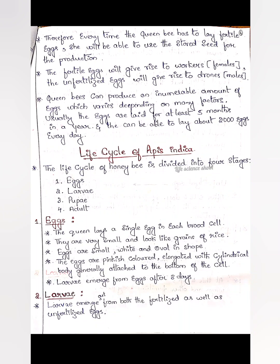She is going to lay eggs of two types: fertile eggs and unfertilized eggs. The fertile eggs will give rise to workers, which are females, and unfertilized eggs will give rise to drones. All honeybees are initially fed with royal jelly. After three days, only the queen continues to receive royal jelly beyond five days — those who receive royal jelly for more than five days become the queen. The queen bee can produce an innumerable, almost infinite, number of eggs depending on many factors, and usually eggs are laid for at least five months to one year.